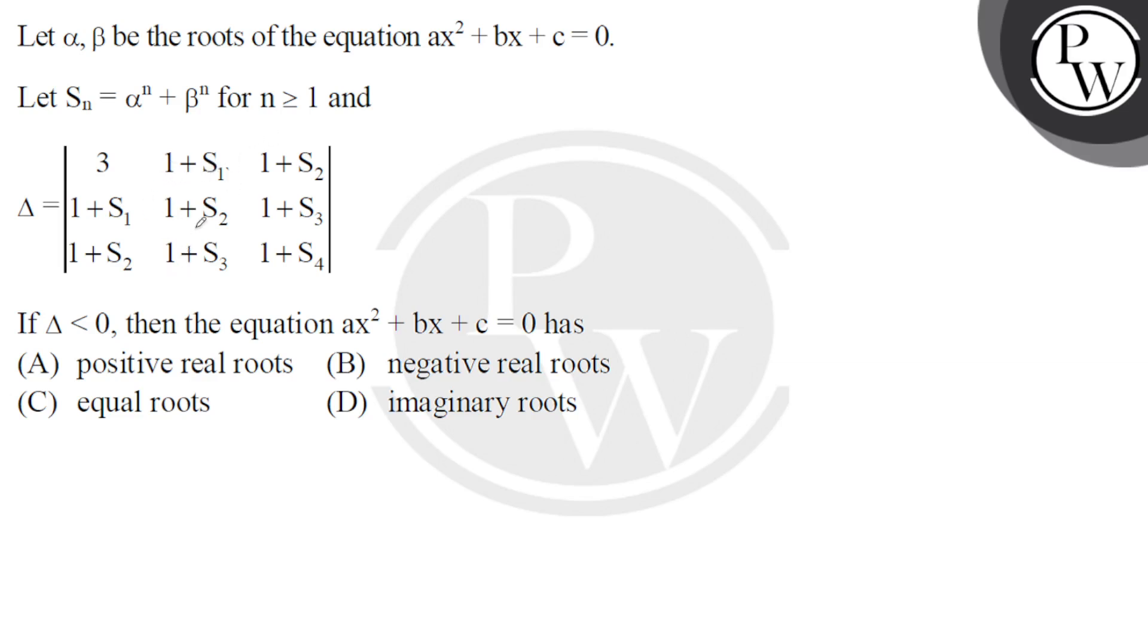The equation ax² + bx + c = 0 has sum of the roots α + β = -b/a and product of the roots α·β = c/a. Now if we talk about delta...